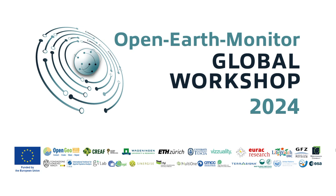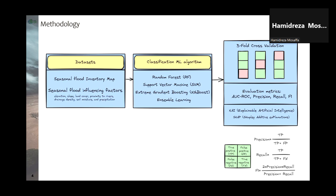We use machine learning algorithms because this is essentially a classification problem. We tested four different algorithms: Random Forest, SVM, XGBoost, and an ensemble of the models. For evaluation, we use threefold cross-validation for training and assessing performance. We also use the SHAP package to gain explainability into the model's predictions, helping us understand which factors are most influential in the classification.